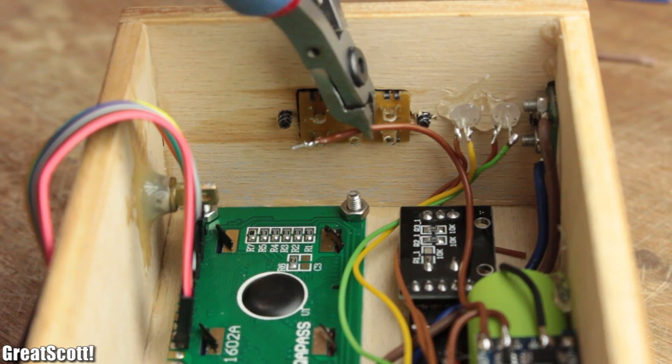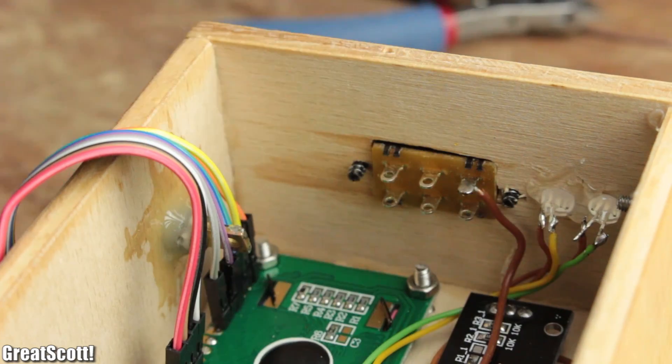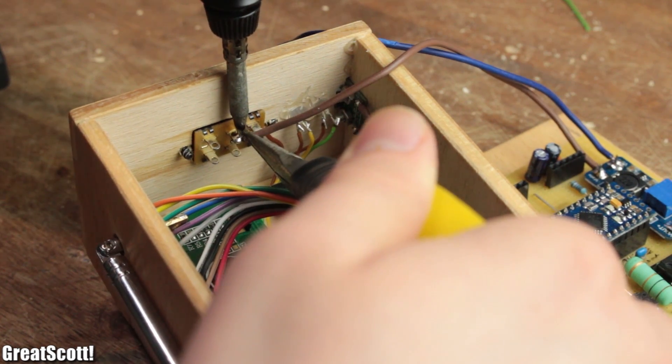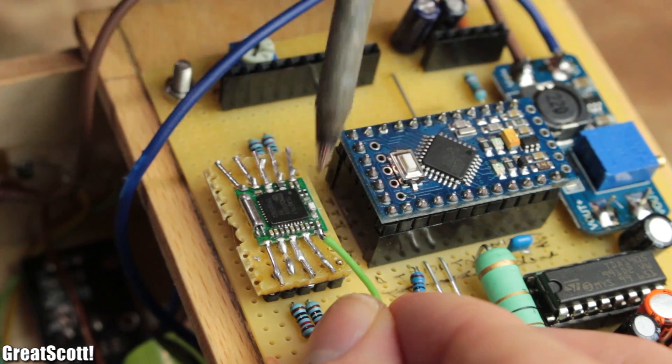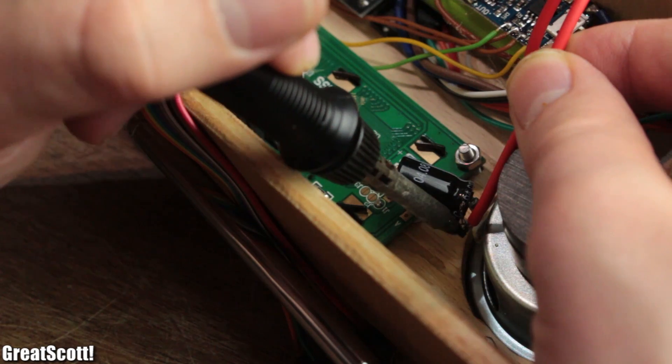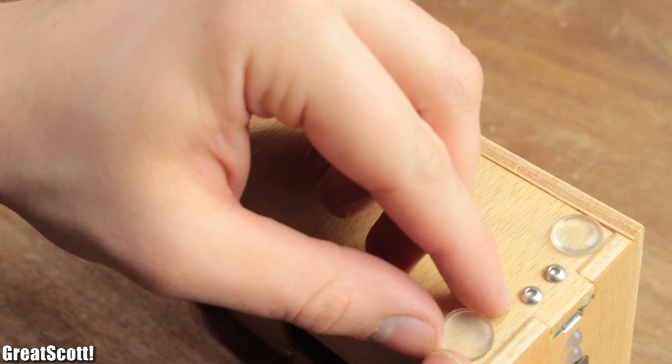I connected the output plus terminal of the TP4056 board to one side of the slide switch, while the other side, the negative output terminal and the antenna directly connects to the main circuit. The only thing left to connect was the speaker and after this was done, the radio was theoretically complete, but the back side obviously does not stay in place yet.